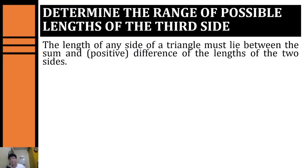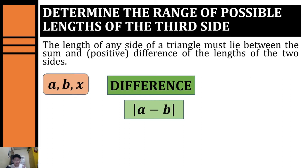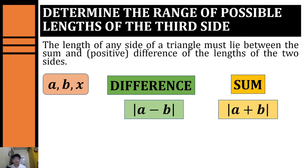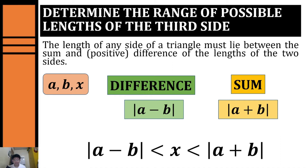To determine the range of possible lengths of the third side, we must get the positive difference by taking the absolute value of the difference of our first and second side, and then get the sum of our first and second side. We can place it in the form of an interval from the difference to the sum of the two sides — that will be the range of possible lengths of the third side.